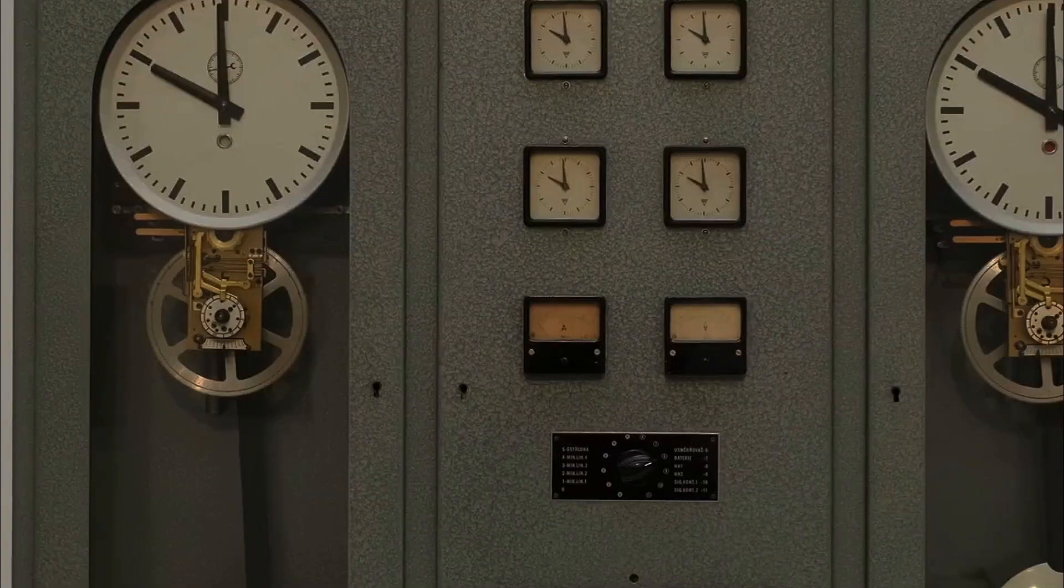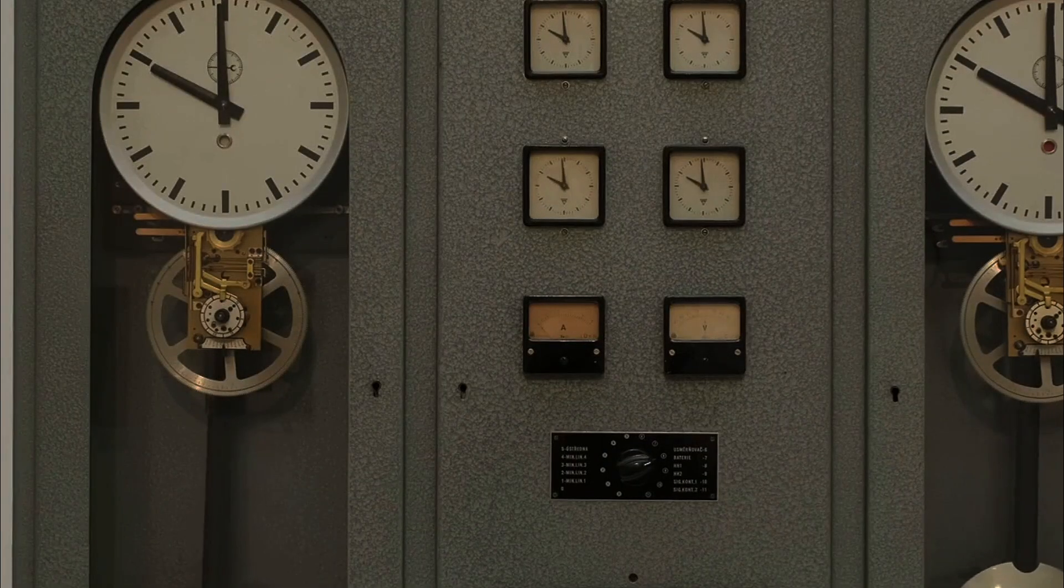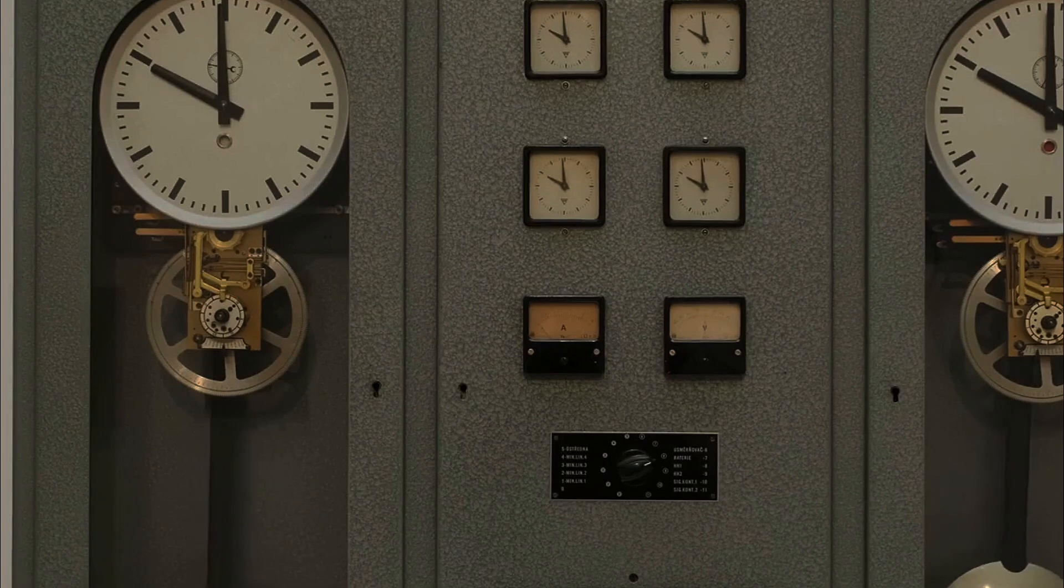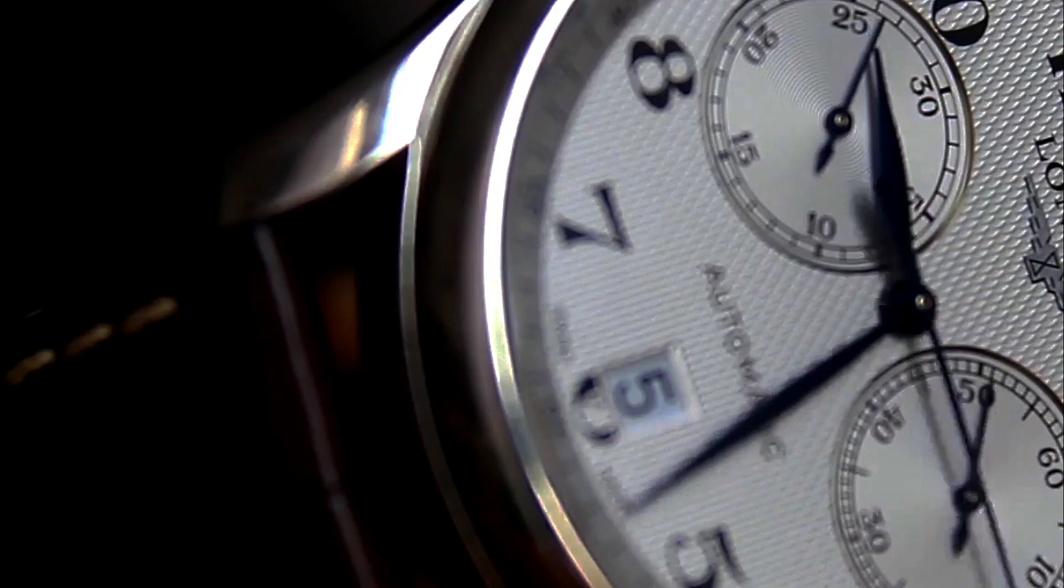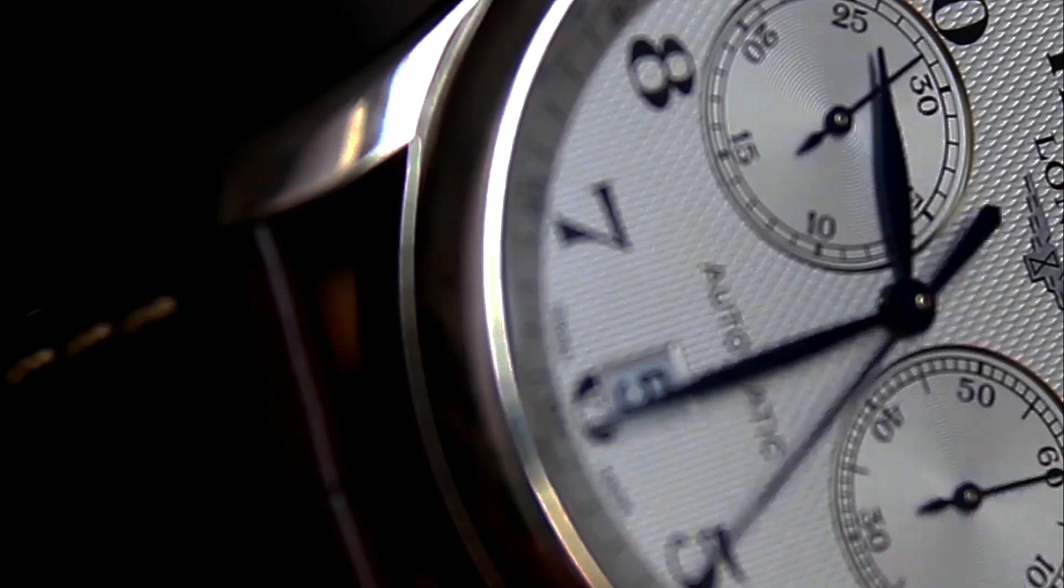Let's shift our focus to another revolutionary perspective: time in the realm of general relativity. In classical mechanics, time was seen as an absolute, unchanging backdrop, a universal clock ticking away uniformly, indifferent to the events occurring within its frame. However, Albert Einstein's theory of general relativity turned this notion on its head.